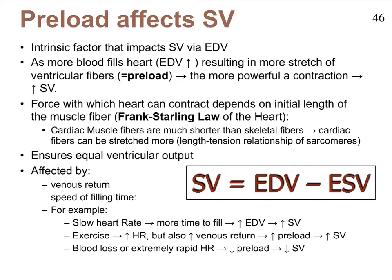Remember the formula for stroke volume. It's the difference between end diastolic volume — that is the amount of blood in the heart after full relaxation — and subtract from that the ESV, that is how much blood is left in the heart after the blood has been ejected, after systole, after contraction. With the help of this formula, we can then try to take a look at what the three major factors are that impact stroke volume. And these factors are going to do that either through EDV, through ESV, or sometimes even both.